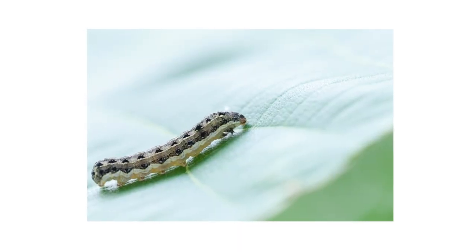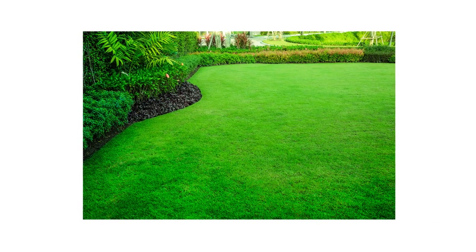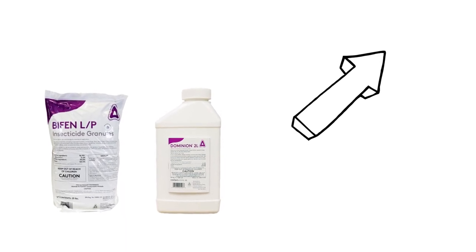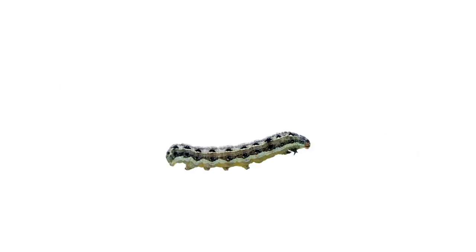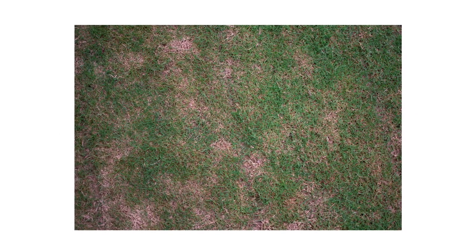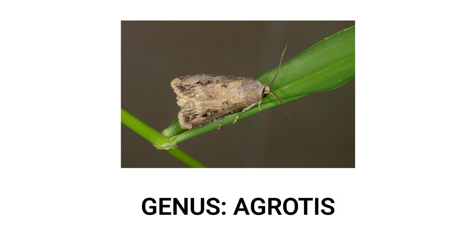In this video, we'll show you how to identify and get rid of cutworms in your lawn so your grass can stay green and healthy throughout the year. The first thing you should do in any pest control plan is identify what exactly you're dealing with. Your lawn can form patches of dead grass for many reasons, from fungus to pests to stress factors. Cutworms refer to the larvae of certain moths in the genus Agrides.